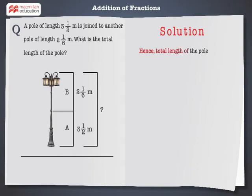Hence, the total length of the pole is 5 and 2 by 3 meters.